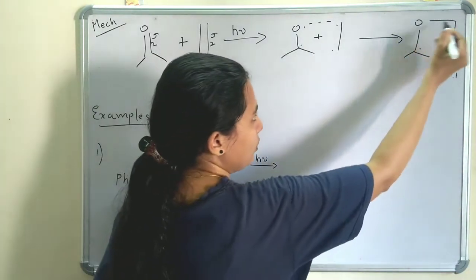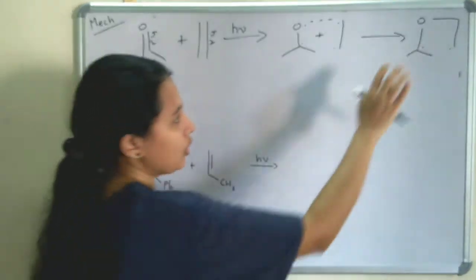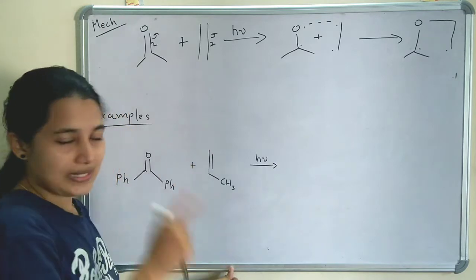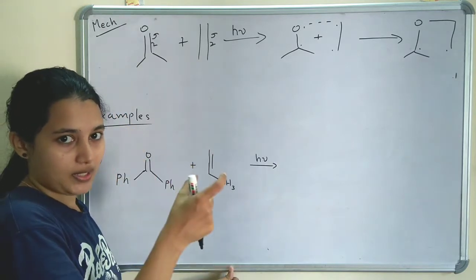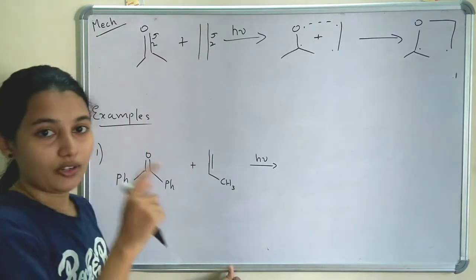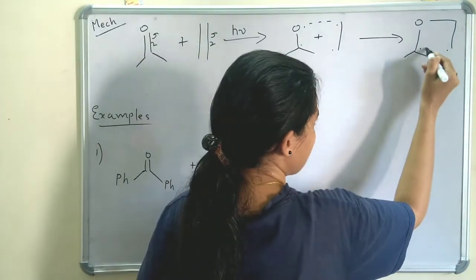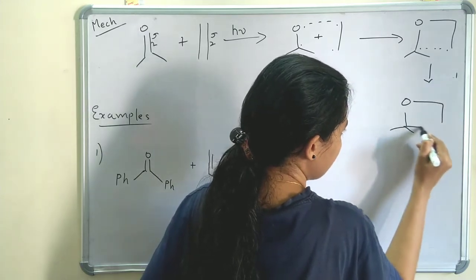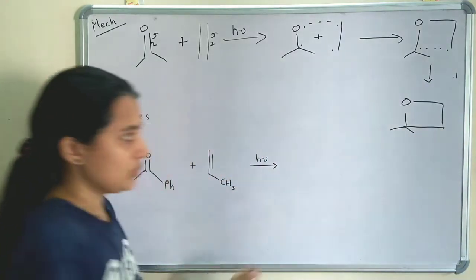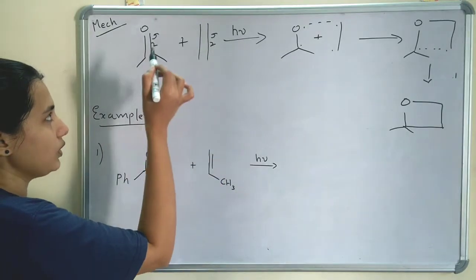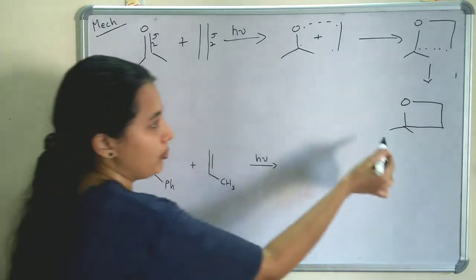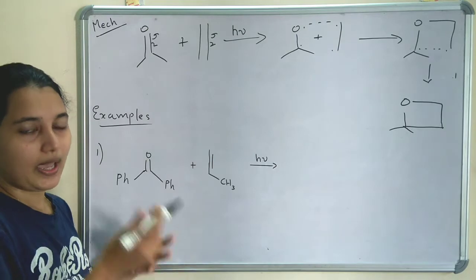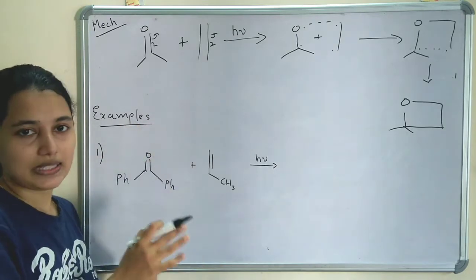So counting positions 1, 2, 3, 4 — radicals at the first and fourth positions form the 1,4-biradical. The product depends upon the stability of this 1,4-biradical formed. These radicals can then combine to form a bond, and an oxetane is formed. So ketone and alkene are cycloadded with a 1,4-biradical intermediate, and the stability of that radical determines the product.